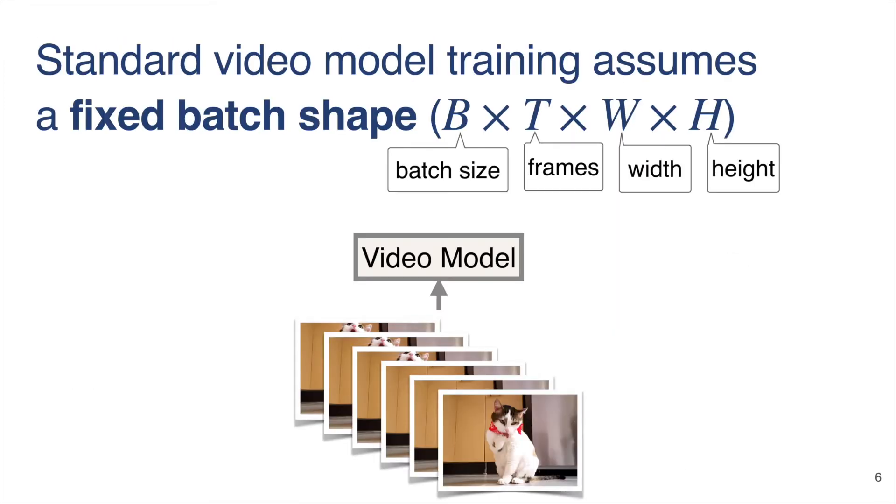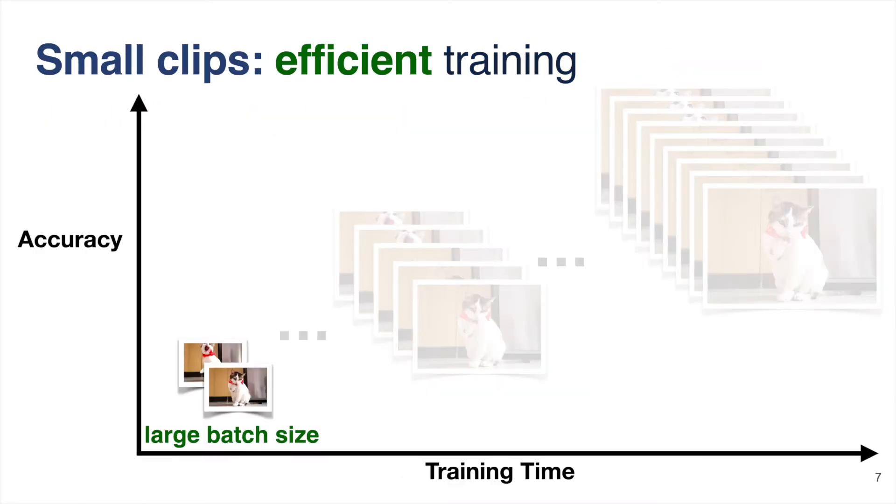With the standard video model training method, it's difficult to leverage these properties for fast training because it assumes a fixed batch shape throughout the training process. Furthermore, assuming a fixed batch shape for training results in a trade-off between accuracy and training time. Using clips with smaller spatial or temporal dimensions allows us to use a larger batch size so we can train more efficiently.